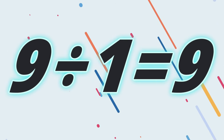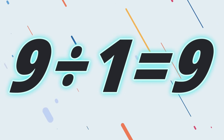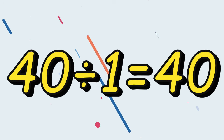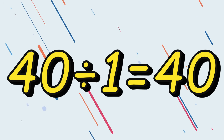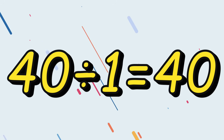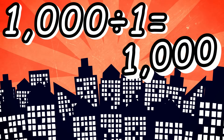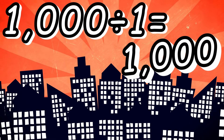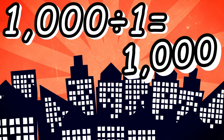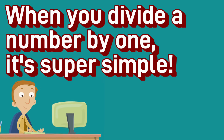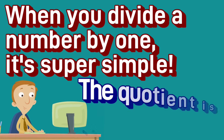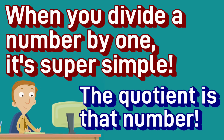Anytime you divide a number by one, the quotient is that number, because all of it is going into just one group. For example, nine divided by one equals nine. Forty divided by one equals forty. One thousand divided by one equals one thousand. When you divide a number by one, it's super simple — the quotient is that number.